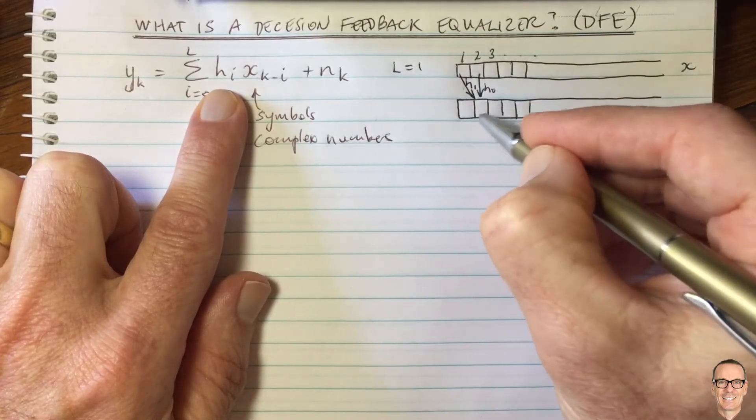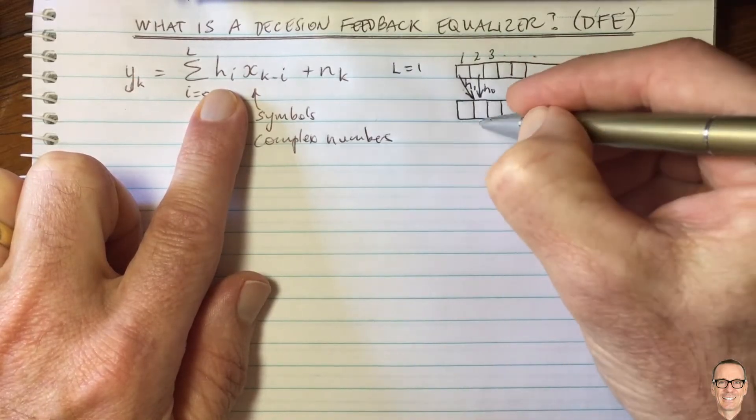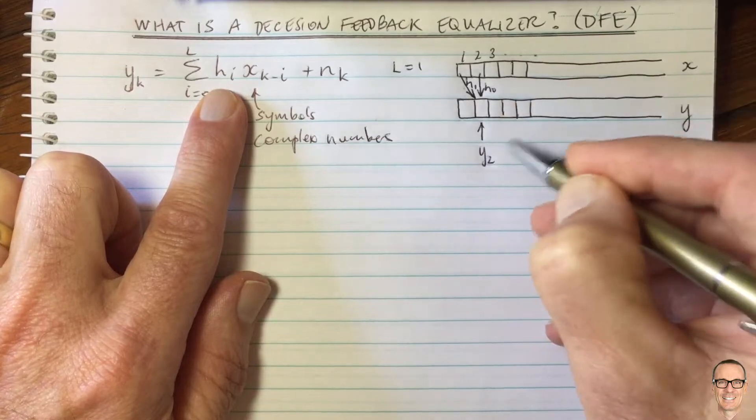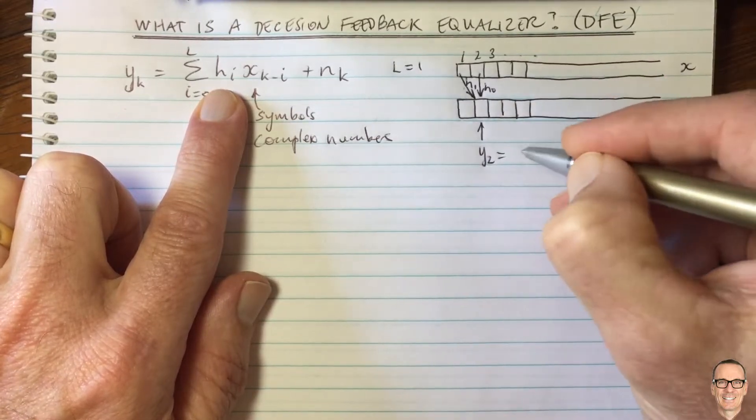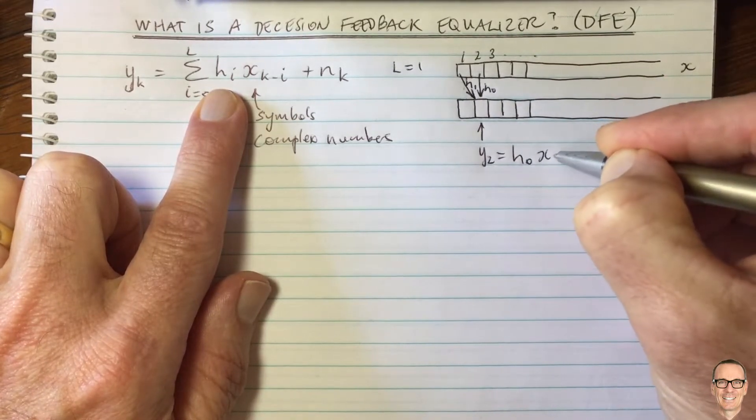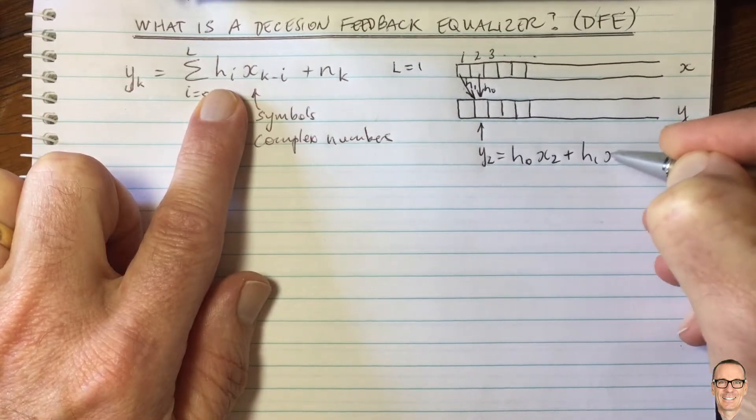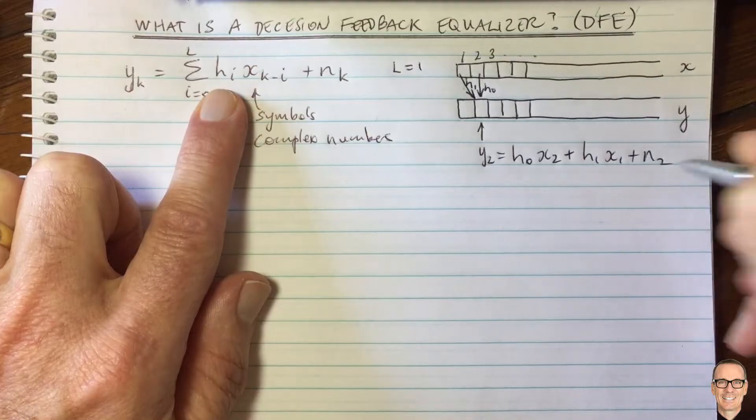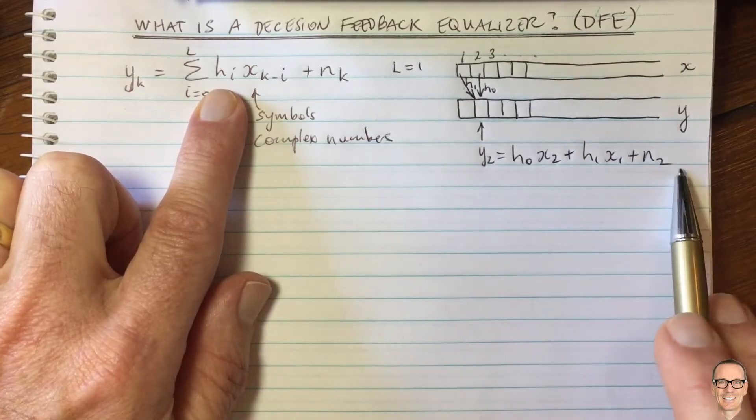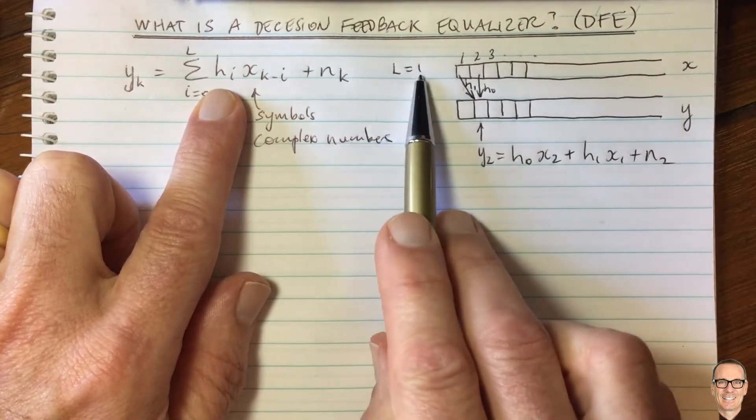And this is being multiplied by h1. Okay, so that's the measurement here at y2. So this here is y2 and that equals h naught times x2 plus h1 times x1 plus the noise at time two. So this is the equation in this case when l equals one.